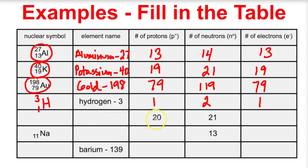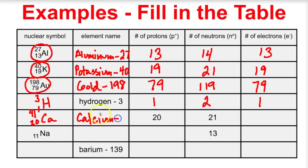Let's look at this one: 20 protons. What element has an atomic number of 20? That's calcium. We write the chemical symbol for calcium with 20 as the atomic number in the bottom left-hand corner. Protons plus neutrons gives the total mass of this isotope, which is 41. The name is calcium-41. How many electrons? The same number as protons — 20 electrons.